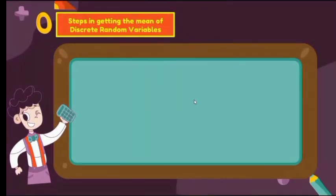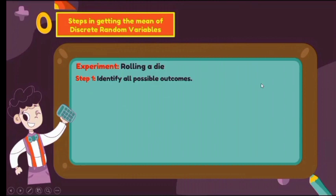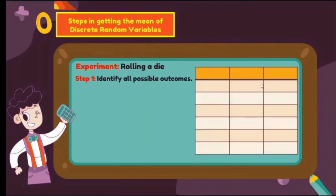Next, we have the steps in getting the mean of the discrete random variable. For example, the experiment of rolling a die. Step 1: identify all the possible outcomes. You have to construct a table. For the first column, consider the number of spots or the random variable X. Since we are rolling a die, we consider the faces of the die: 1, 2, 3, 4, 5, and 6.